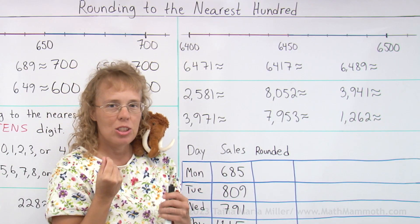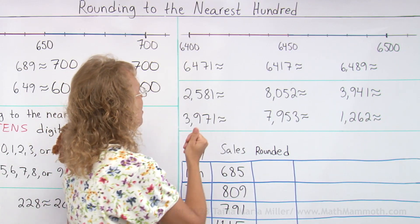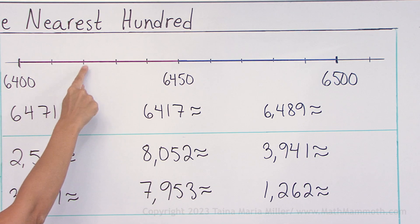Again, the same thing happens. We just need to look at the tens digit. Think about the tens. For example, this one here is 6420. That's 20 or two tens. It's going to be rounded down.